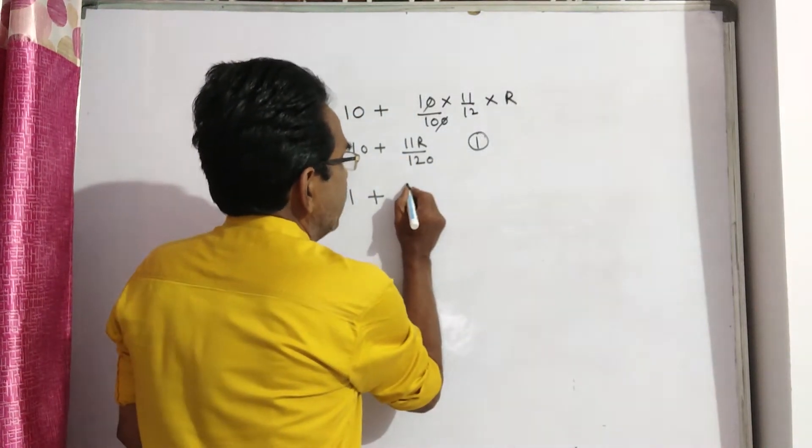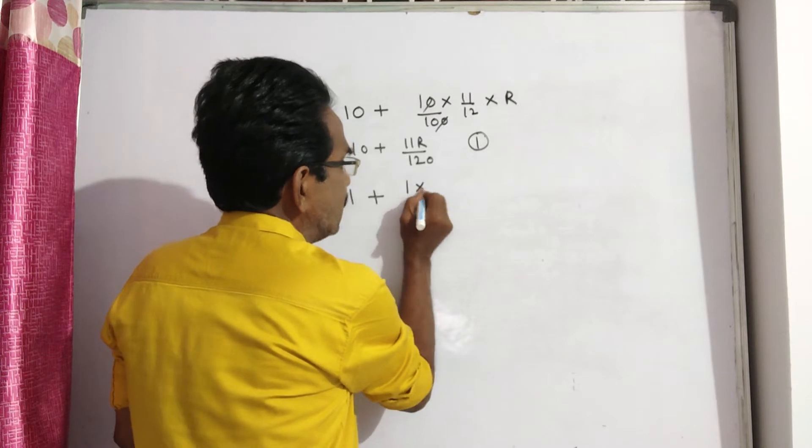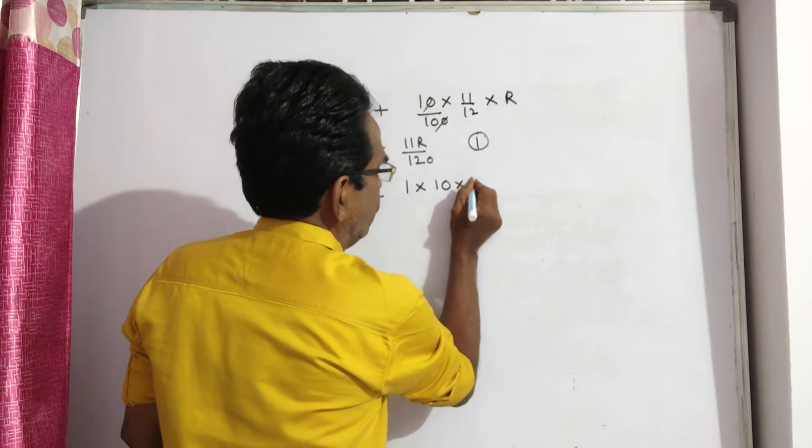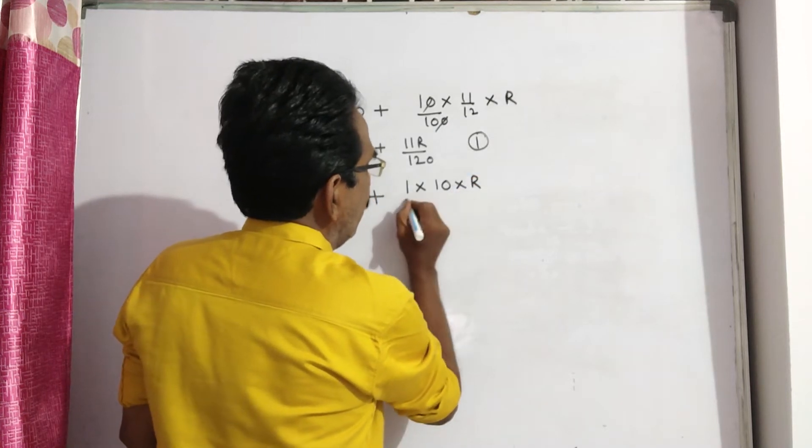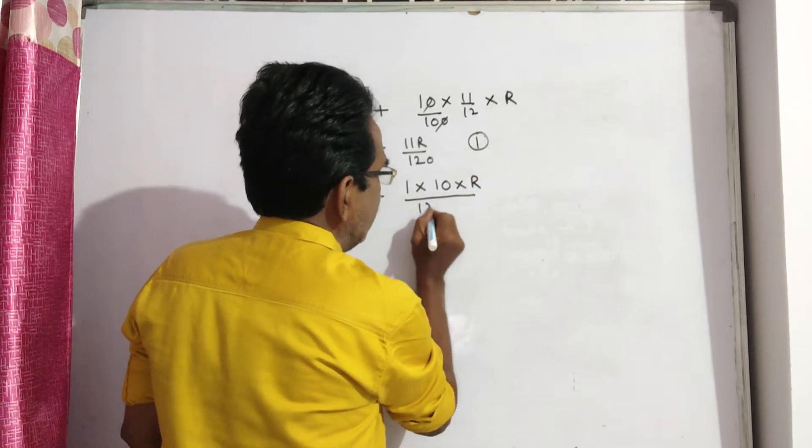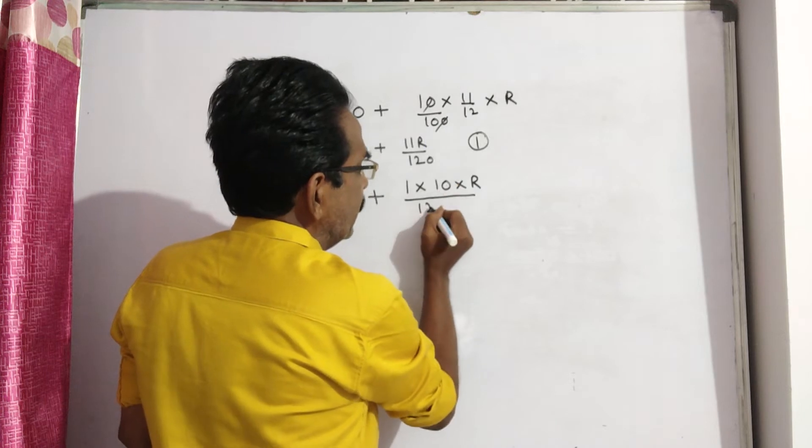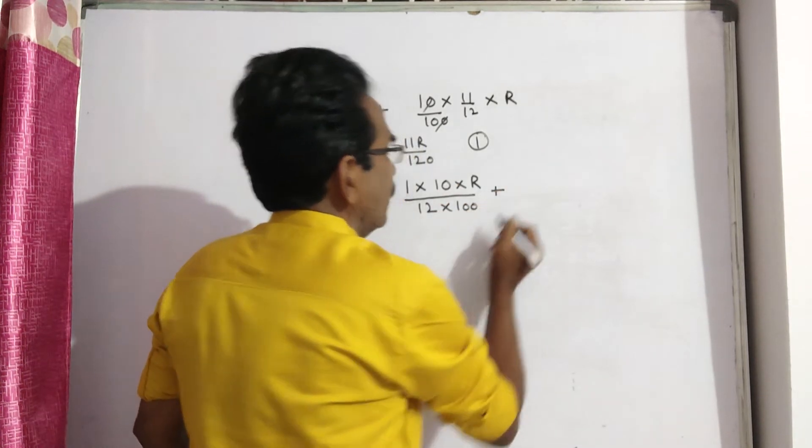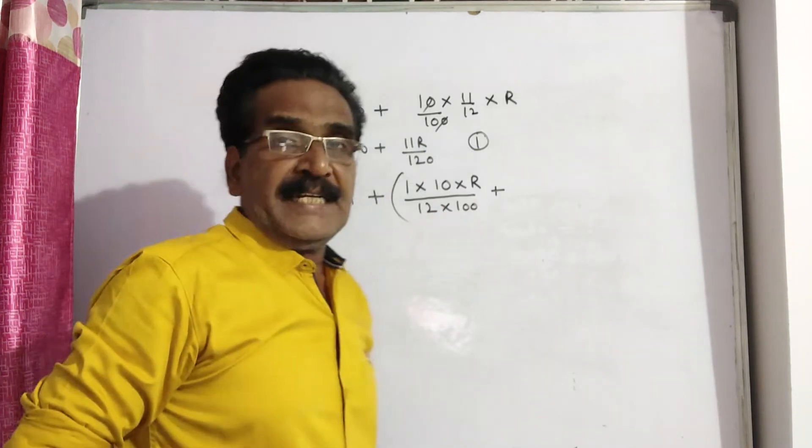Interest on 1 rupee for 10 months: P, T, R by 100, which is 10 by 12 into R by 100. Then the second installment: